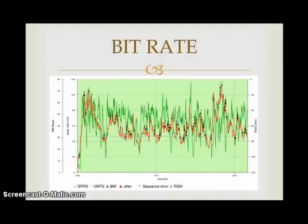Bitrate is quantified using the bits per second unit, often in conjunction with SI prefixes such as kilo, mega, giga, or tera. Note that although the IEC 60027-2 standard defines conventions for binary multiples, when describing a bitrate, the SI base-10 exponents for decimal multiples are traditionally used. A bitrate of one gigabit per second is equivalent to 1,000,000,000 bits per second, not 1,024.